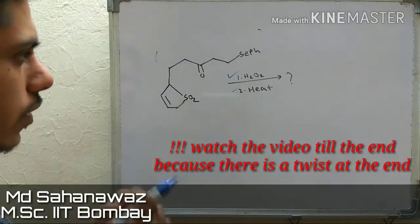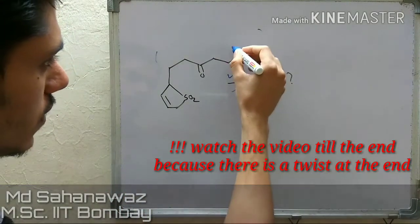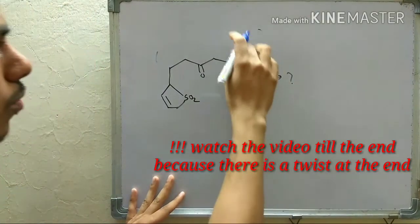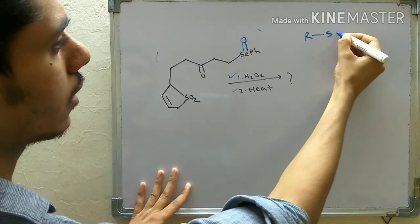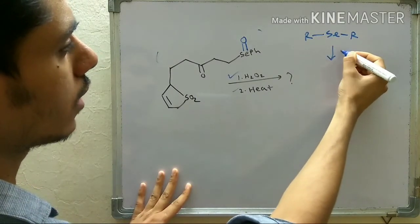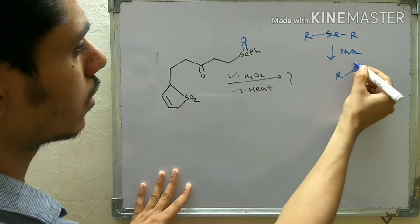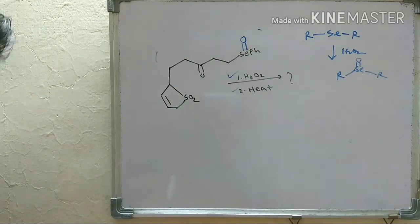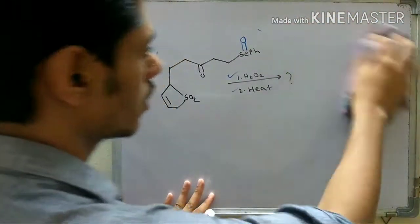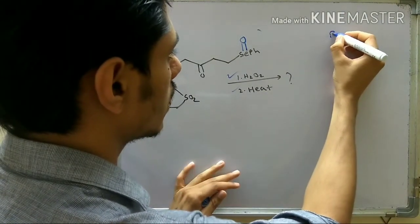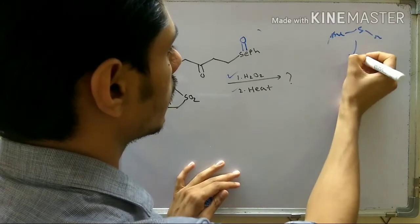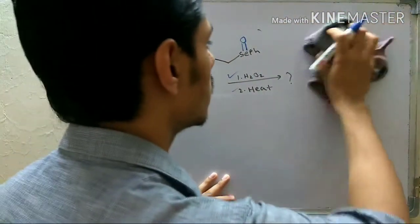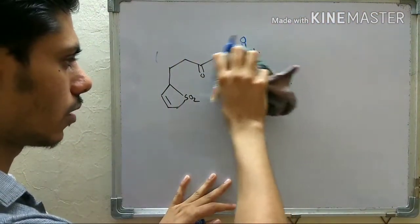When you treat any selenium compound with hydrogen peroxide, it will oxidize the selenium to give a selenium oxide. If you have an R–Se–R group and react it with H₂O₂, you get selenium oxide — just like sulfoxide. In the presence of sulfur you get sulfoxide; with selenium you get selenium oxide. This is how we prepare DMSO: take dimethyl sulfide and react it with H₂O₂. The same type of reaction occurs here to give selenium oxide.